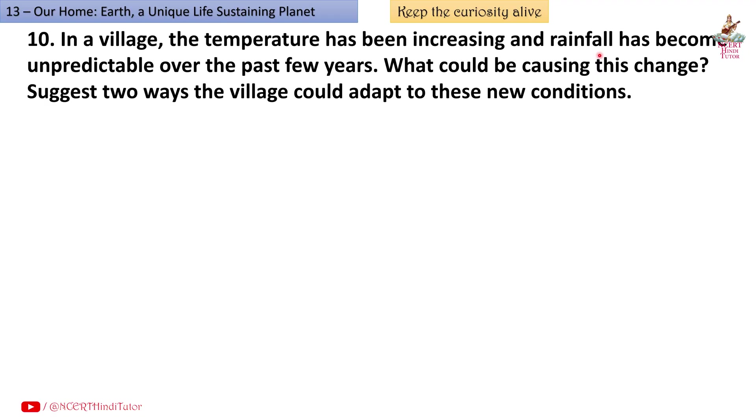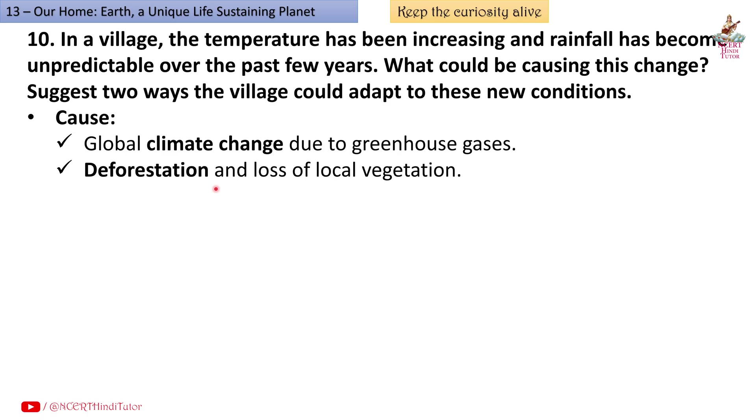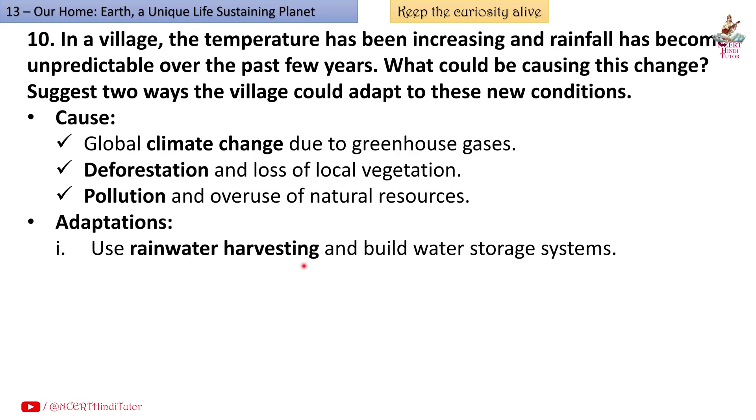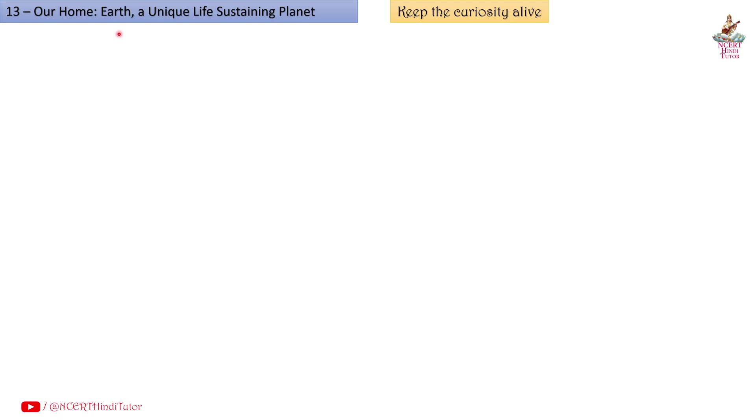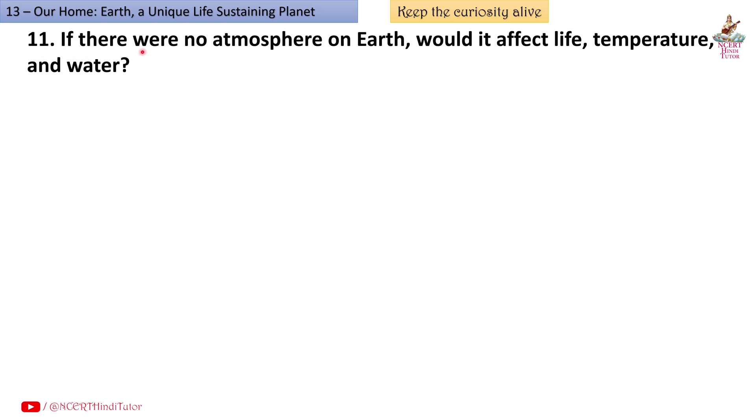Question 10: In a village, the temperature has been increasing and rainfall has become unpredictable over the past few years. What could be causing this change? Suggest two ways the village could adapt to these new conditions. Answer: Causes - global climate change due to greenhouse gases, deforestation and loss of local vegetation, pollution and overuse of natural resources. Adaptations: First, use rainwater harvesting and build water storage systems. Second, practice climate resilient farming - drought resistant crops, crop rotation, organic farming.